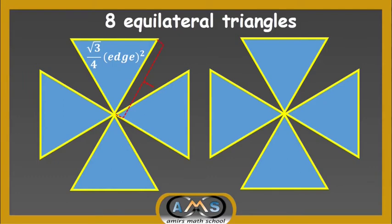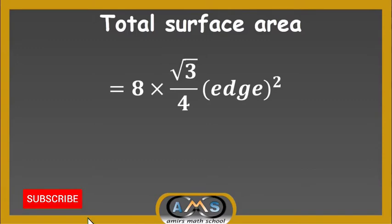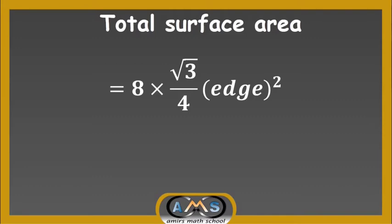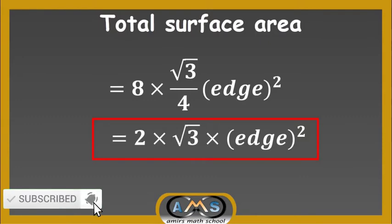For a regular octahedron, all edge lengths are equal. The total surface area is 8 × (√3/4) × edge². We know (√3/4) × edge² is the area of each equilateral triangle, and to construct a regular octahedron we need 8 such equilateral triangles. So the total surface area equals 8 × (√3/4) × edge². Simplifying this, we get 2√3 × edge². This is our working formula for finding the total surface area of a regular octahedron when the edge length is given.